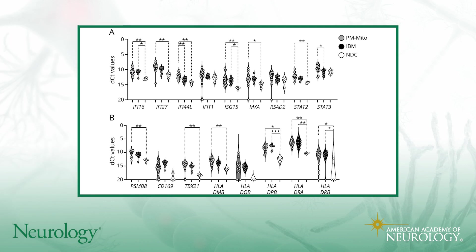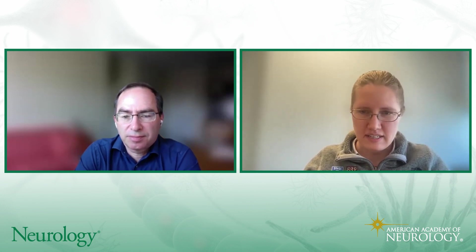This is figure 1b, which looks at a variety of molecules which are downstream of interferon gamma or type 2 interferon. It shows the very similar expression levels of PSNB8, for example, or these HLA markers that are present in both PM-Mito and in IBM. It's quite nicely presented — they're showing the data point for every single sample in a scatterplot with very nice statistical analysis.